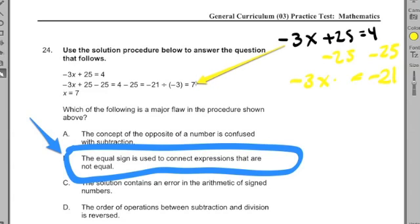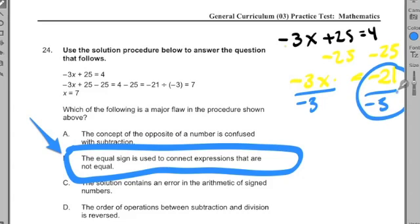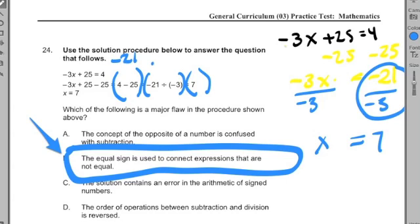The problem is that they didn't follow the correct procedure. At this point right here, to keep this balanced, they should have divided by a -3. Divided by a -3. I know you're going to say, but they divided this by a -3, and they still got the correct answer. This is true, but the way they wrote it, they're saying that this is equal to this, which is equal to this. And that's not true, because this equals -21, this equals 7, and this equals 7. So how could these be equal? And that is what they're saying is incorrect about this.